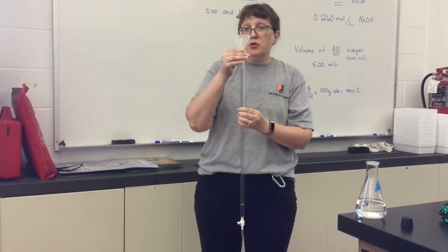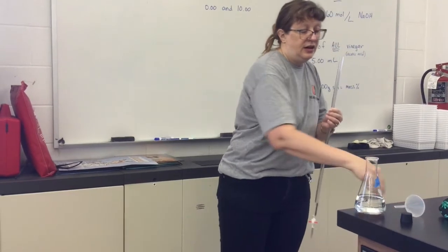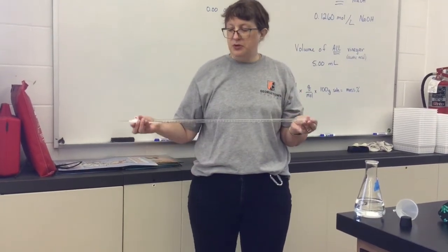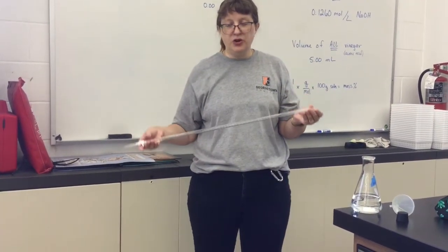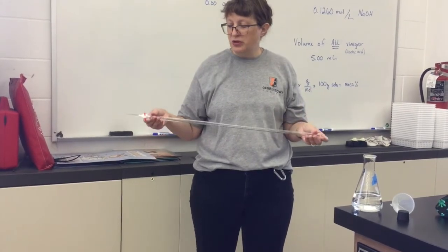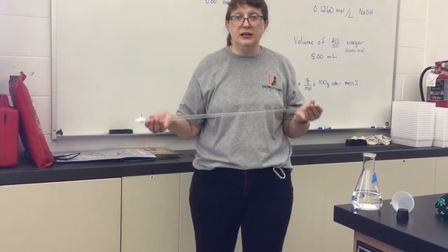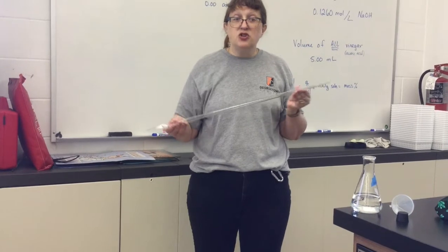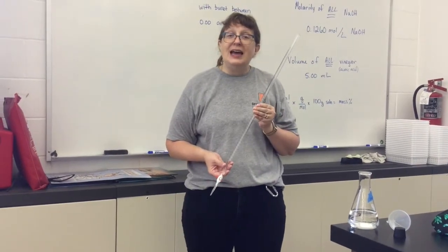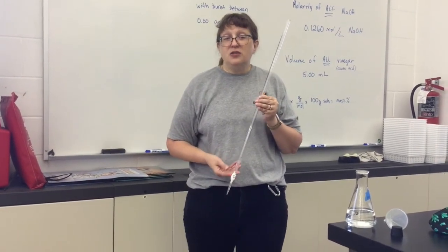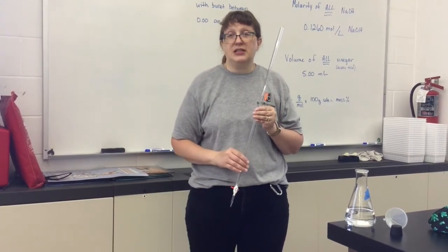Then you will remove the funnel and tip the burette back and forth a little bit, turning it as you do so that you can rinse out the length of the burette. After you do this, drain a little bit into the sink and then dump the rest out so that you can fill it with fresh sodium hydroxide.